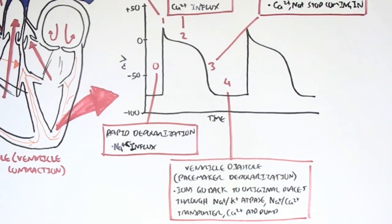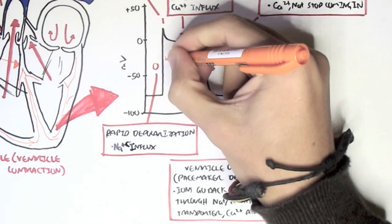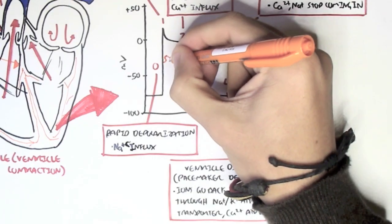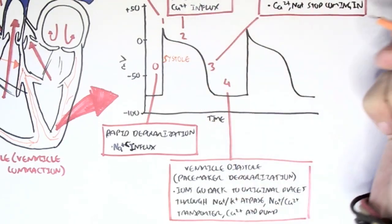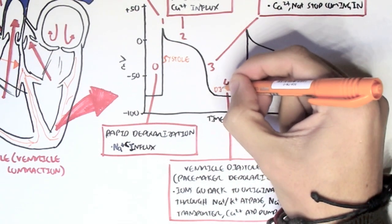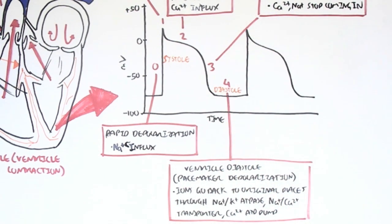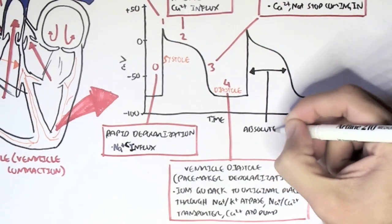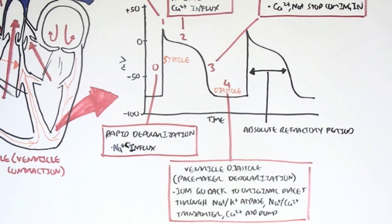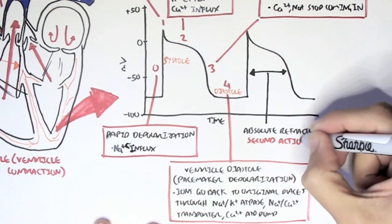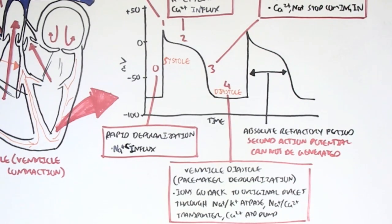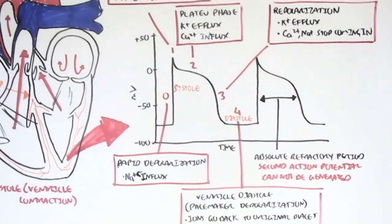From this graph, we can see that when the ventricles depolarize, they contract — we call this systole, because it's when the ventricles are ejecting blood. Phase 4 is when the ventricles are filling with blood, so diastole. An important thing to know is the absolute refractory period, which is the whole duration of the action potential of the ventricle — when a second action potential cannot be generated. This prevents a buildup of contractions, which would otherwise cause some form of heart attack.